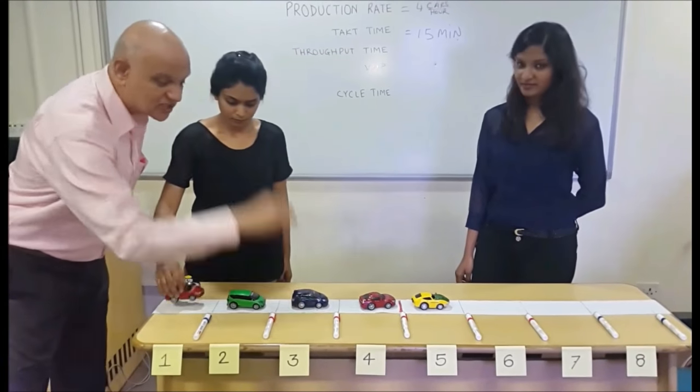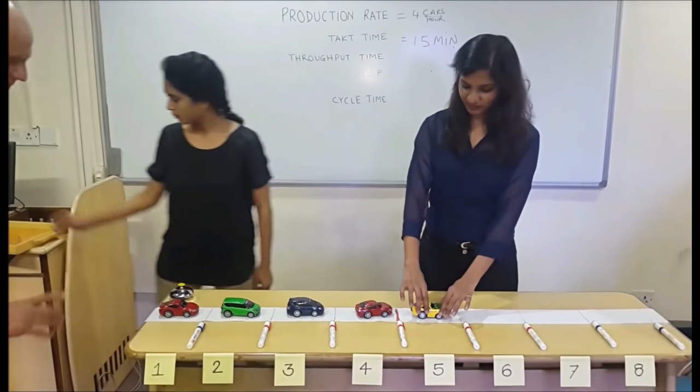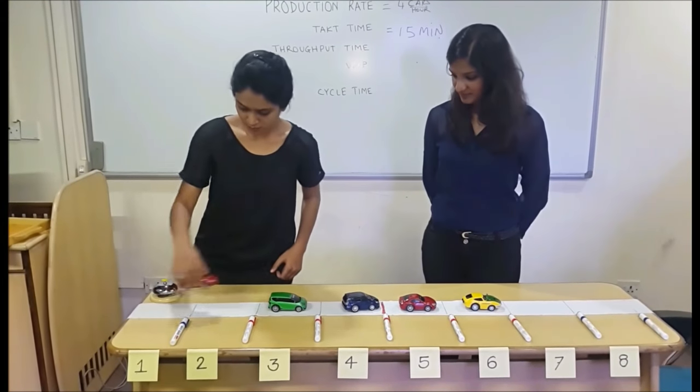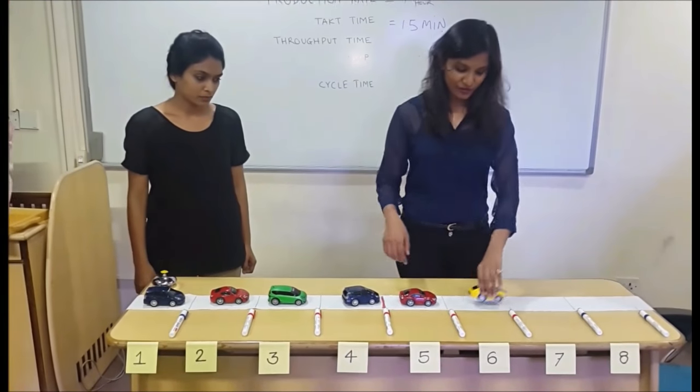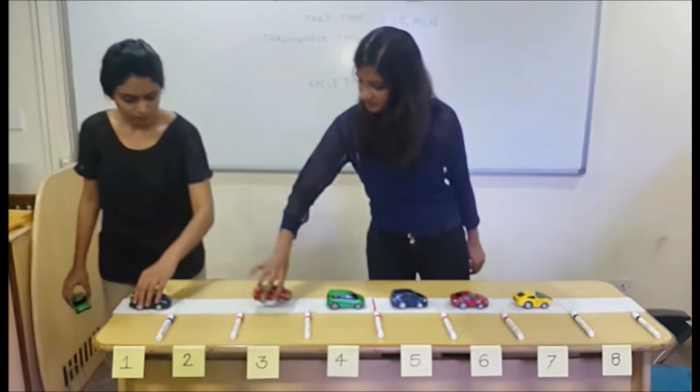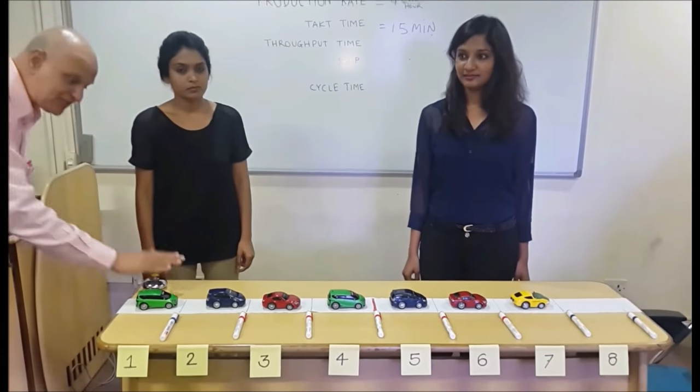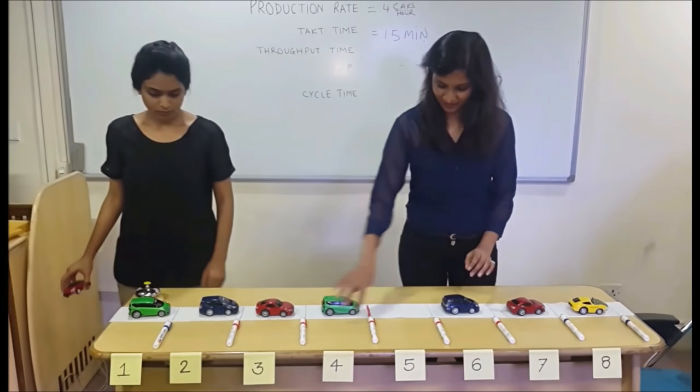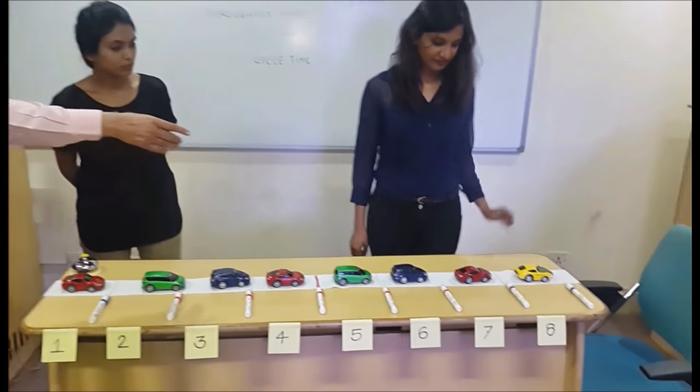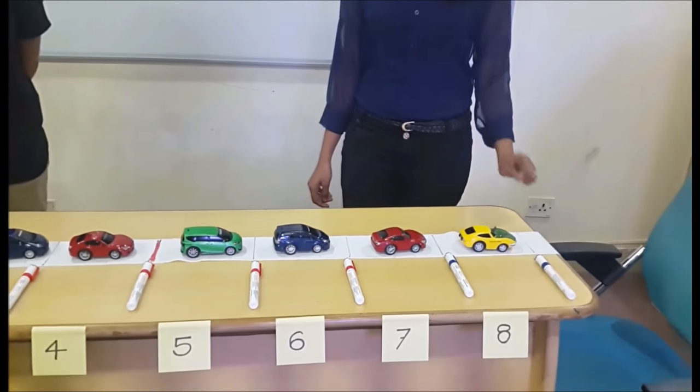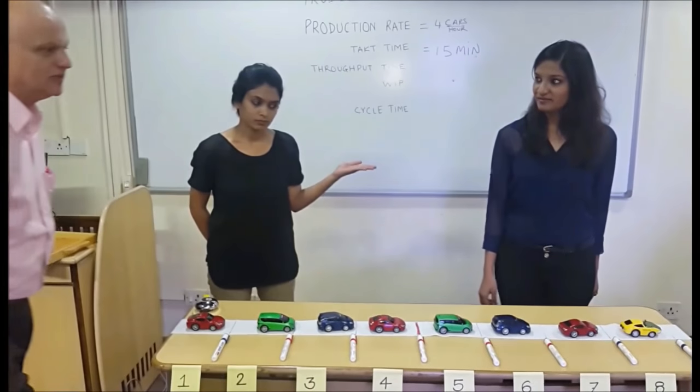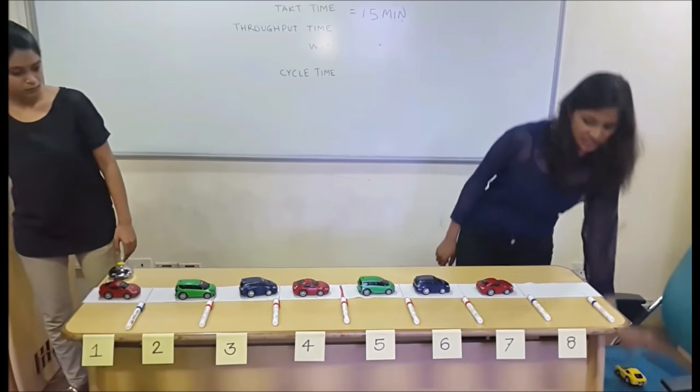In these 15 minutes, every station has got to complete the job assigned to it. The yellow car that we started with, if you can point out to it, has now reached the end. It is waiting for its last 15 minutes. The moment those 15 minutes are over, the car goes out. So let's say those 15 minutes are up. The car goes out of the production line.